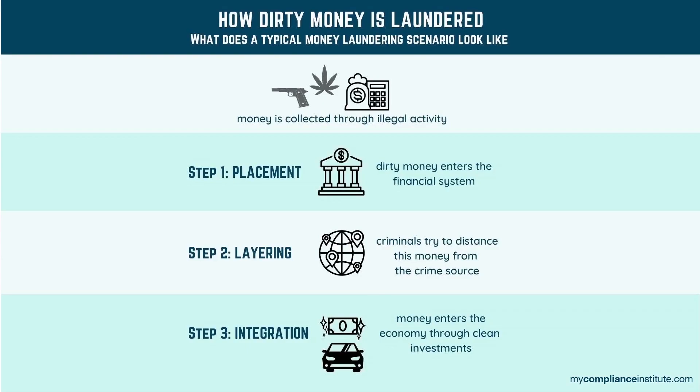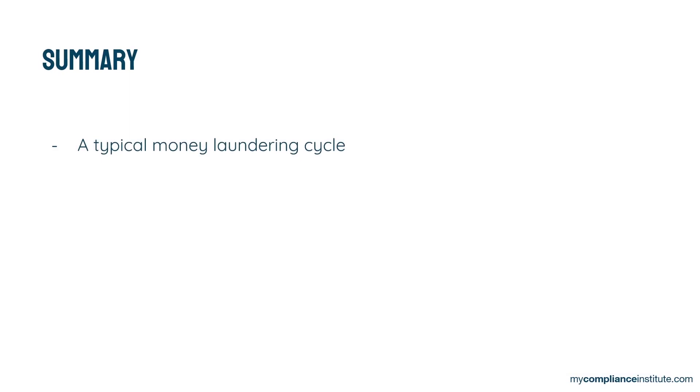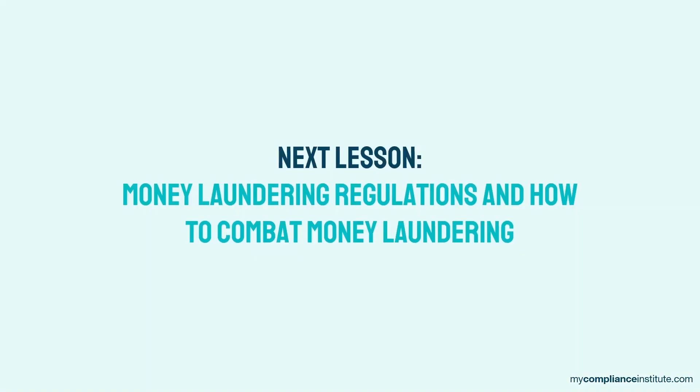As mentioned in our previous video, there are many ways to launder money. The three phases we describe here represent a basic money laundering cycle. To summarize, this lesson explains a typical money laundering cycle and the different stages involved with the help of an example. Our next lesson will focus on money laundering regulation, how to combat money laundering, and what you have to do as a company. Hope to see you there!